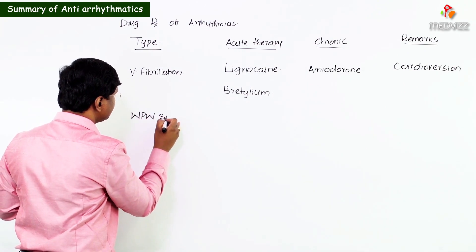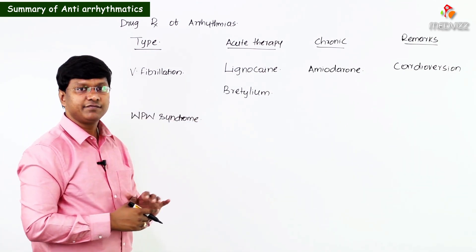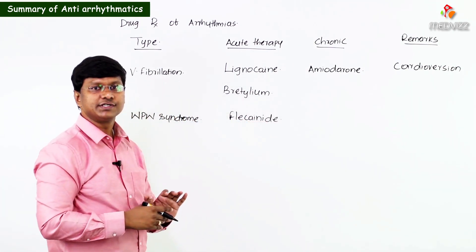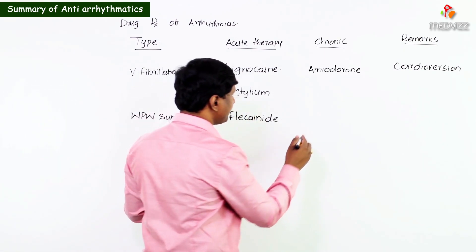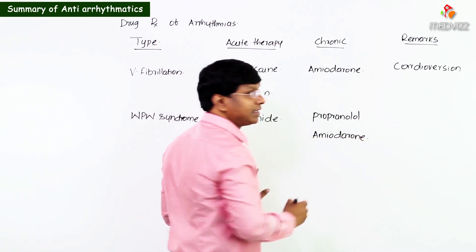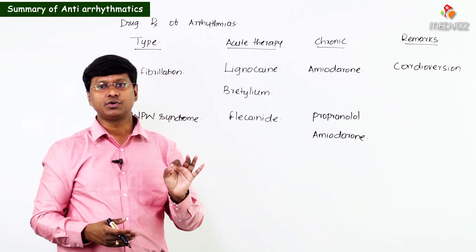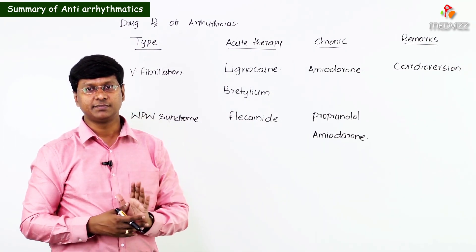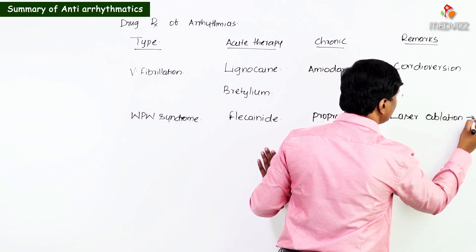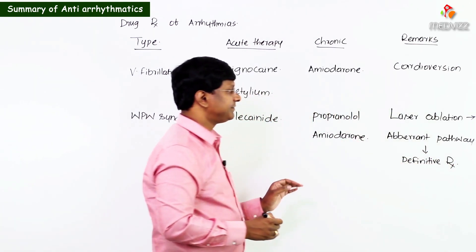In WPW syndrome, the drug of choice for acute therapy is flecainide. For chronic therapy, we give propranolol and amiodarone. An important point: laser ablation of the aberrant pathway is the definitive treatment for Wolff-Parkinson-White syndrome.